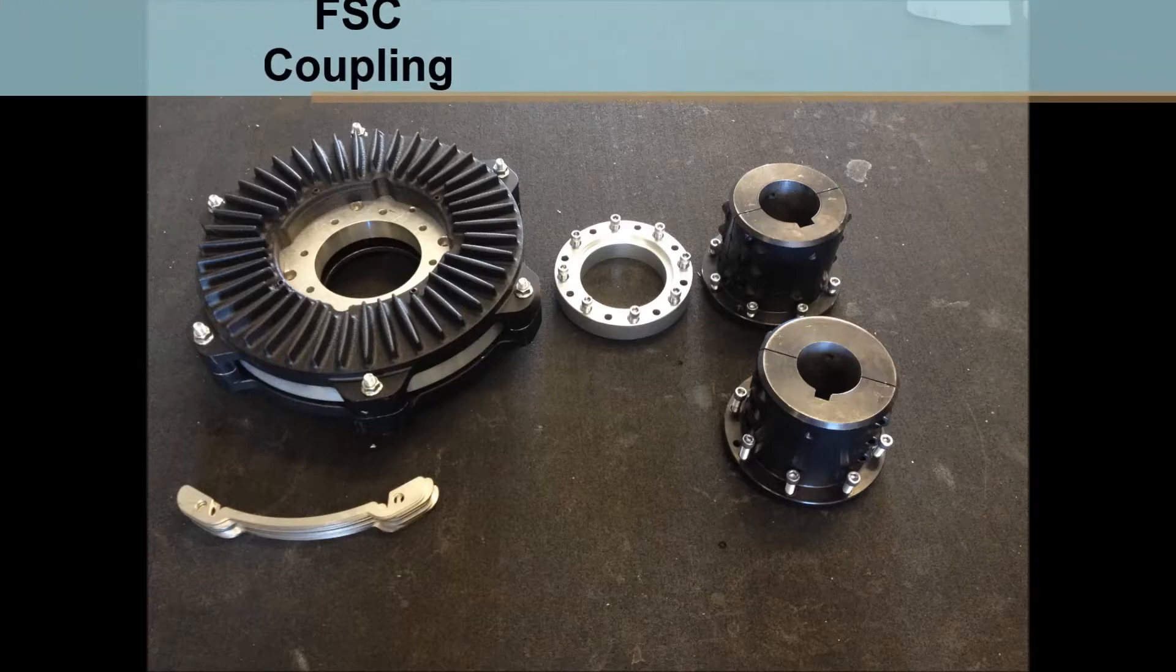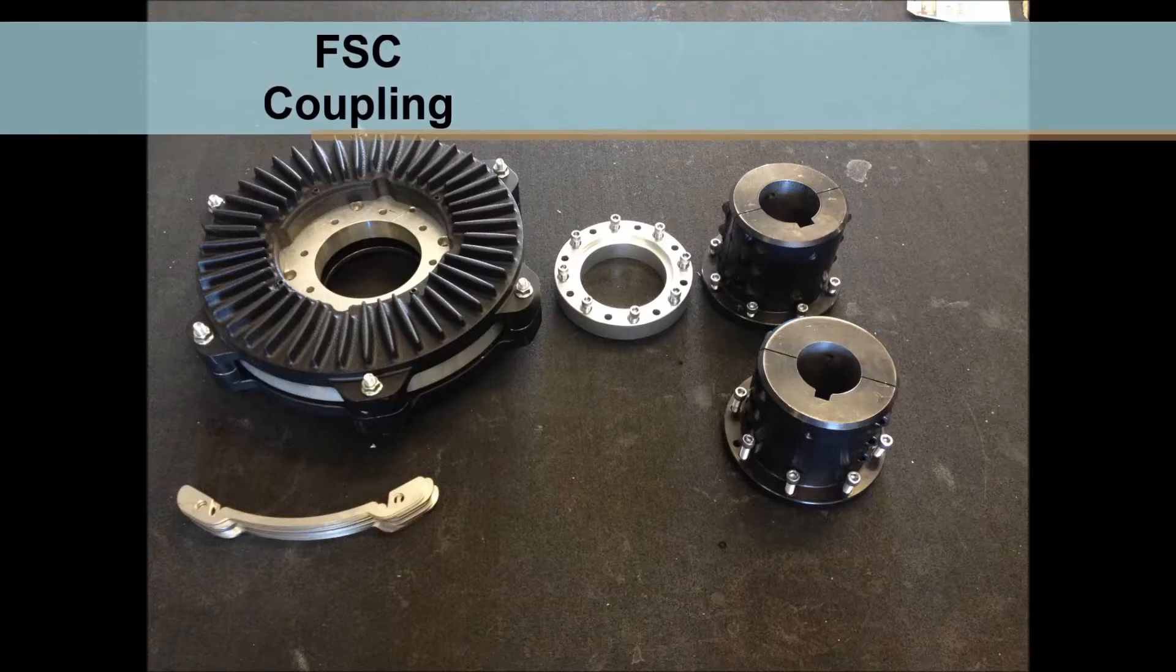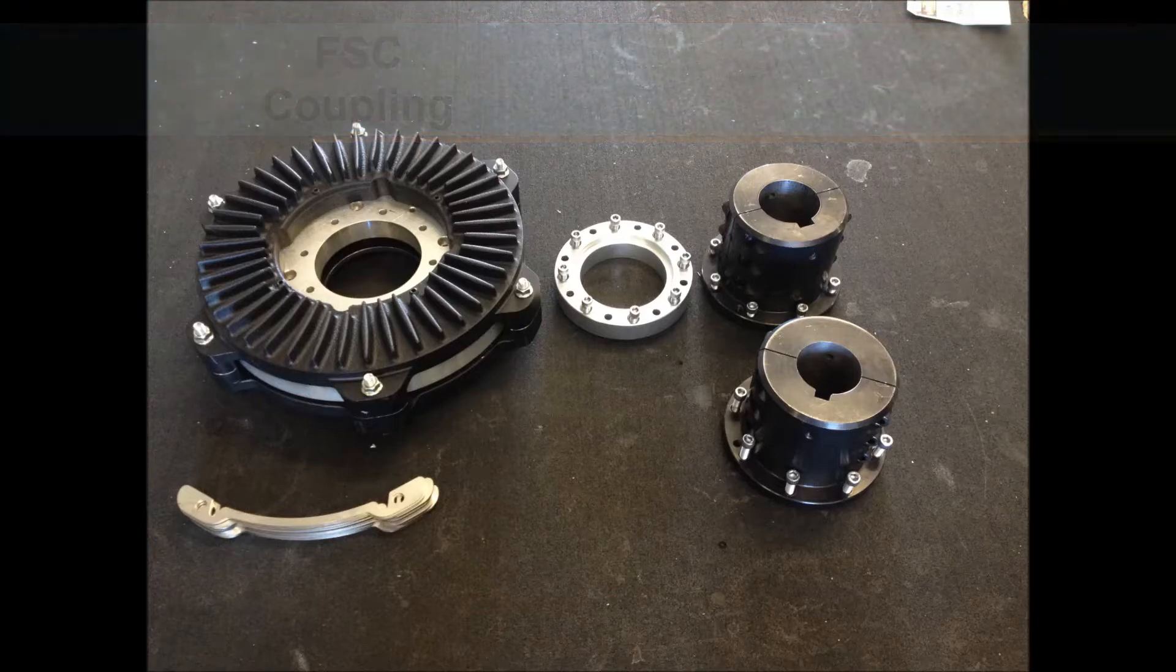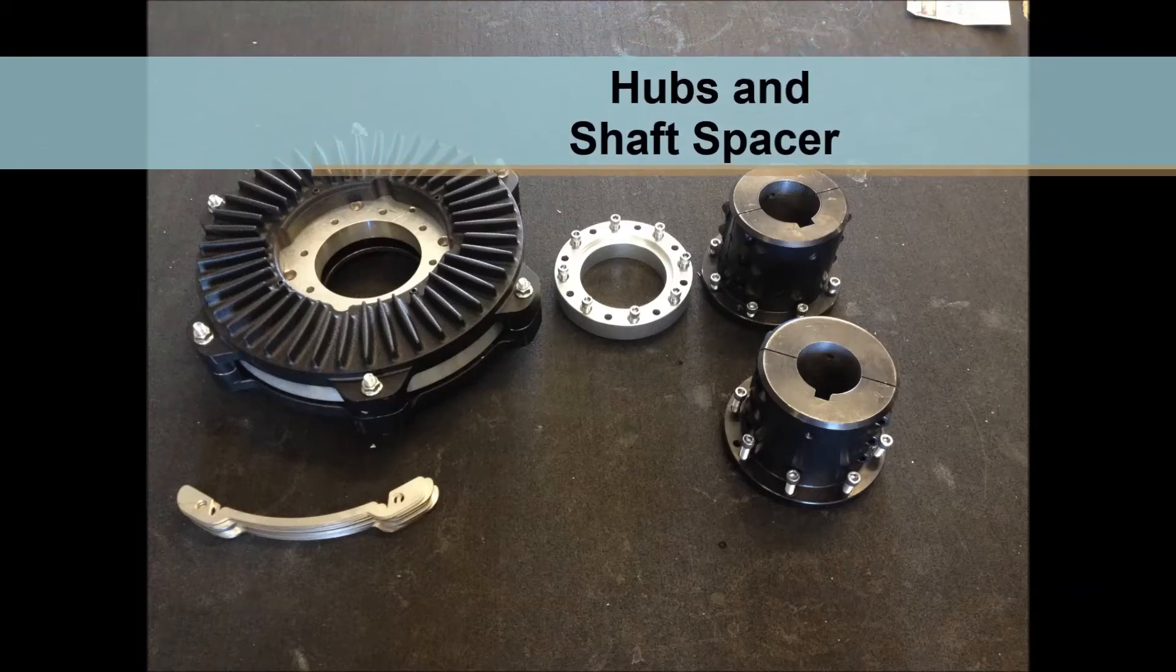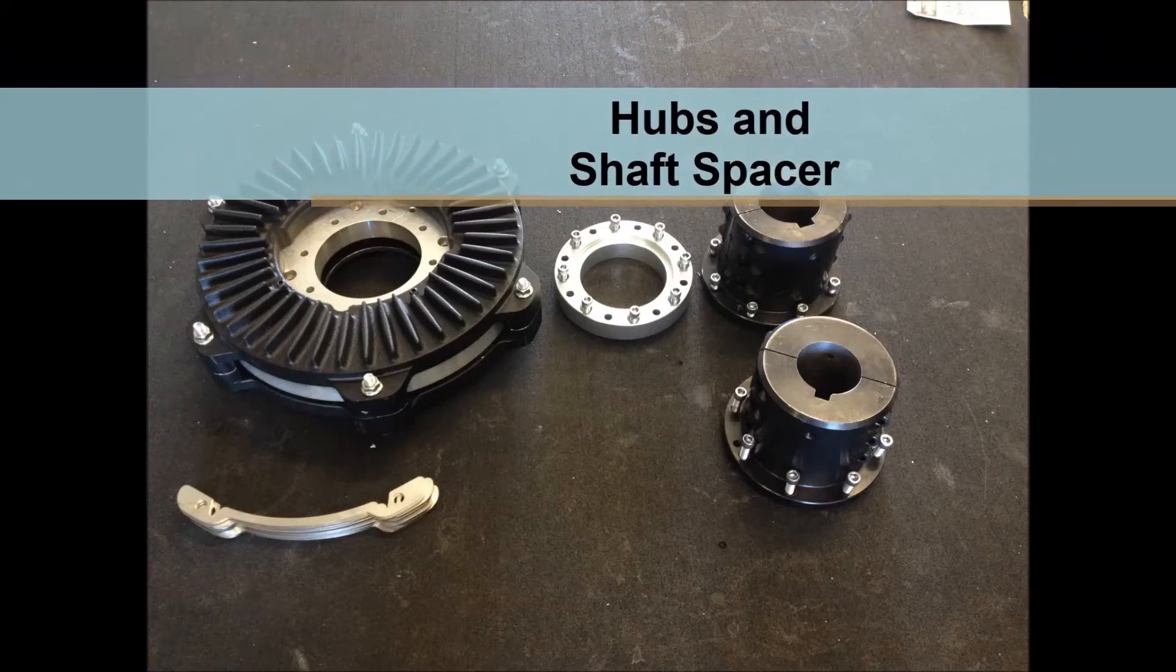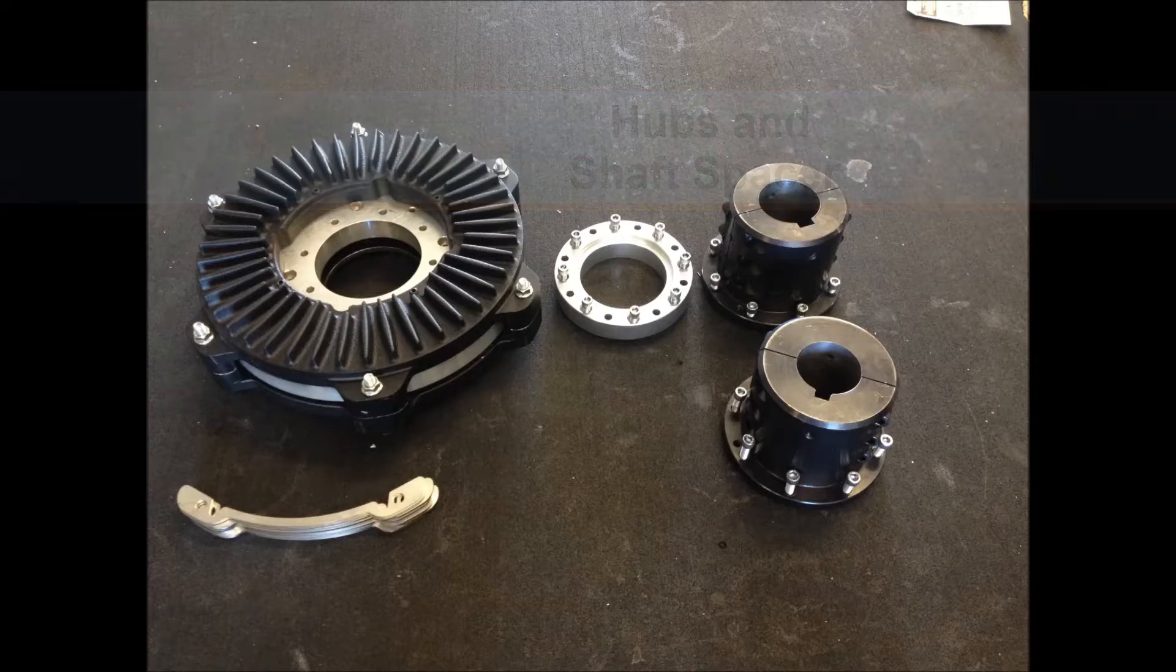The FluxDrive FSC has three major components: the FSC coupling body, the hubs and shaft spacer, and the air gap spacer shims.